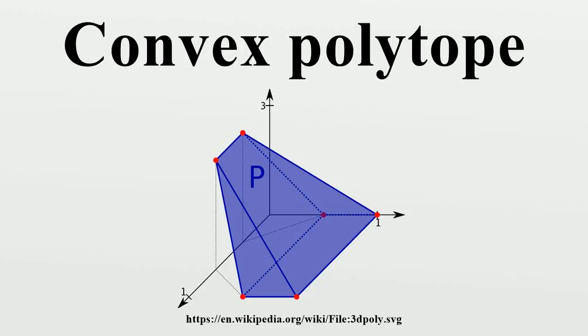A convex polytope is a special case of a polytope, having the additional property that it is also a convex set of points in the n-dimensional space Rn.